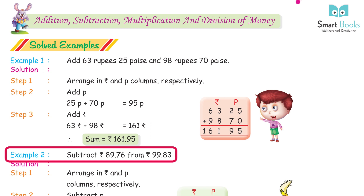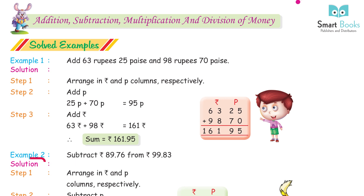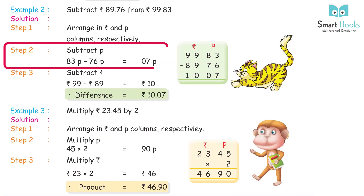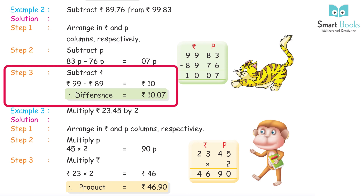Example 2: subtract Rs. 89.76 from Rs. 99.83. Step 1: arrange in rupees and paise columns. Step 2: subtract paise — 83 paise − 76 paise = 07 paise. Step 3: subtract rupees — Rs. 99 − Rs. 89 = Rs. 10. Difference = Rs. 10.07.